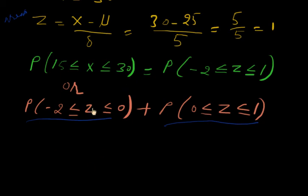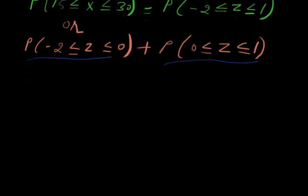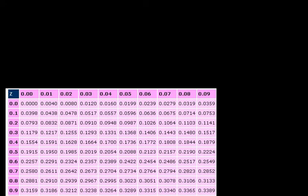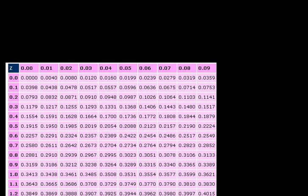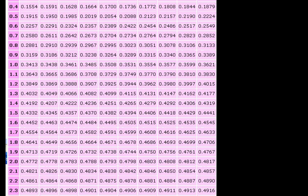We check it in the table for minus 2 and zero. The value is 0.4772.